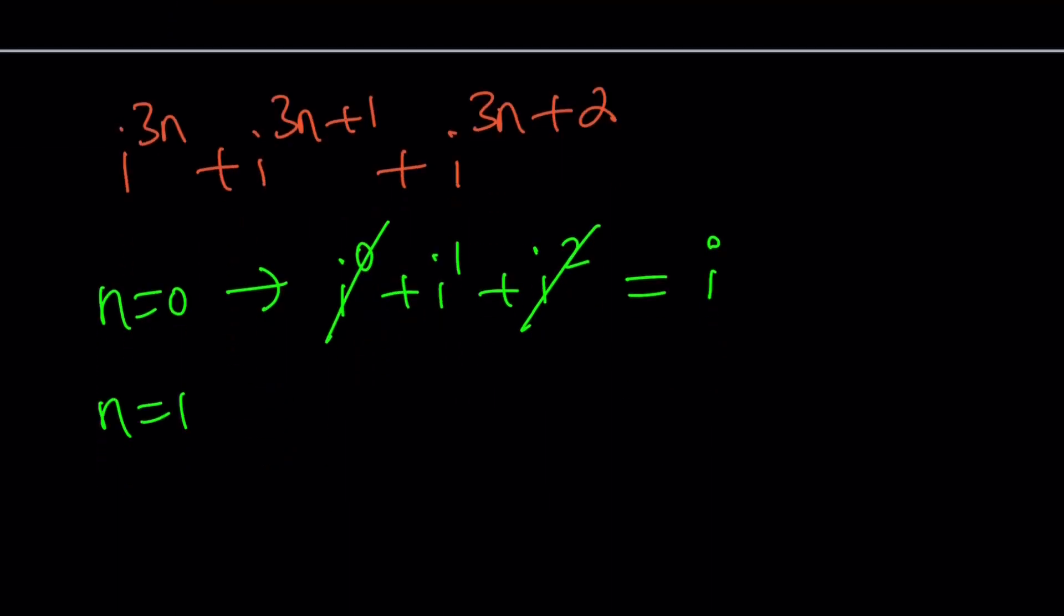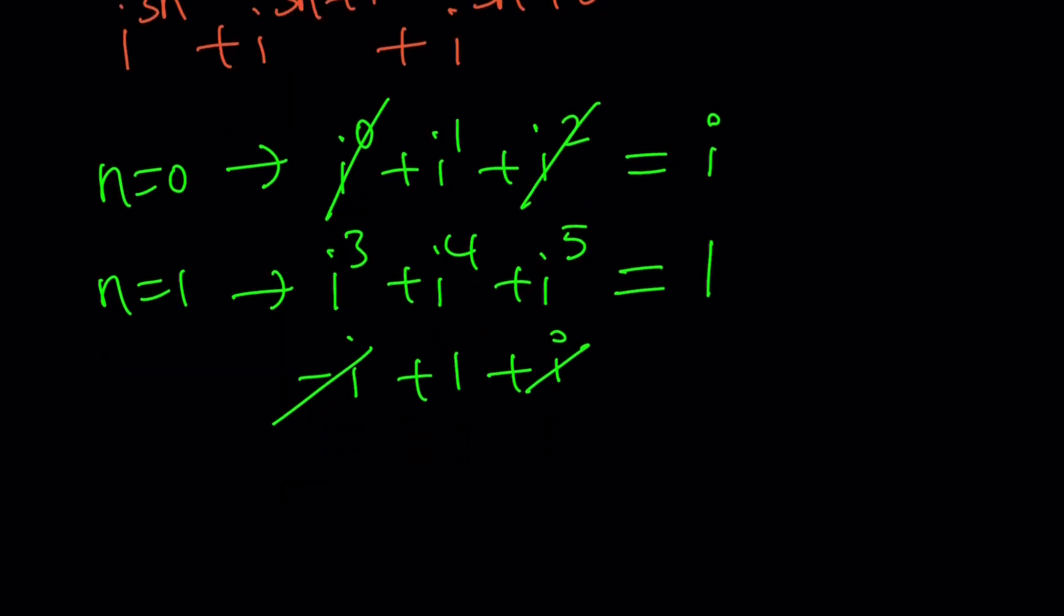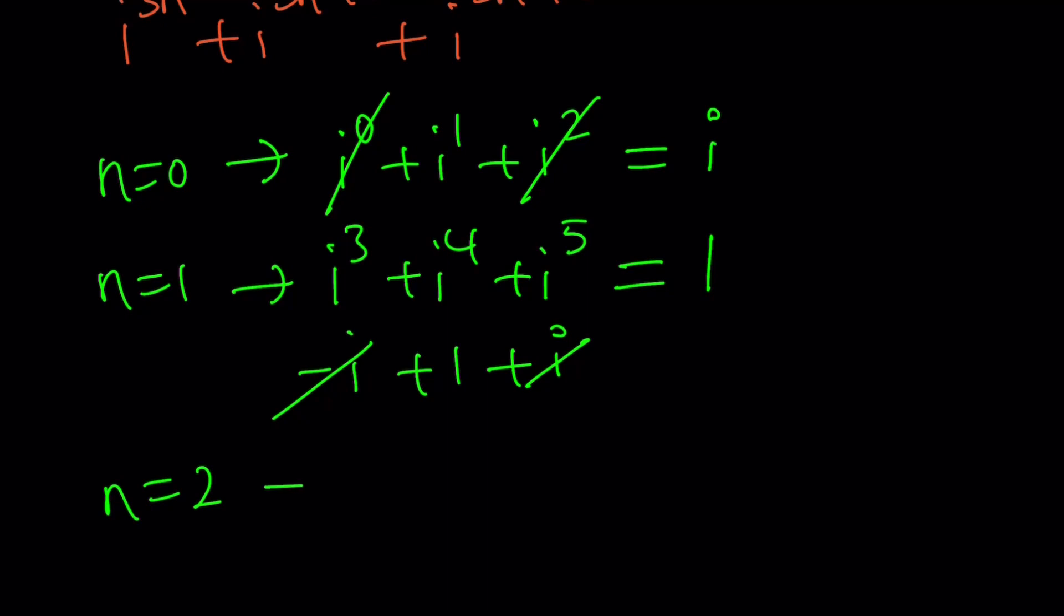What if N equals 1? Then we're going to get i to the power 3 plus i to the power 4 plus i to the power 5. Now this is negative i, this is actually not i, that's i to the power 0, or just 1. This is 1, and this is i. i is going to cancel out this time, and this is going to give us a 1. Interesting.